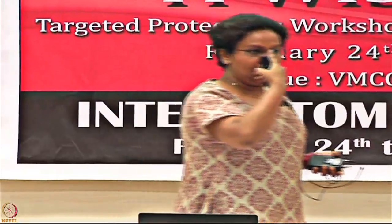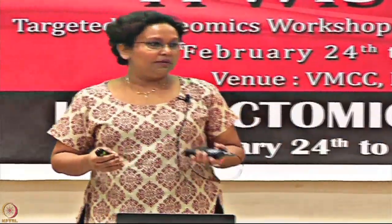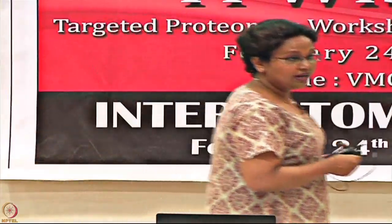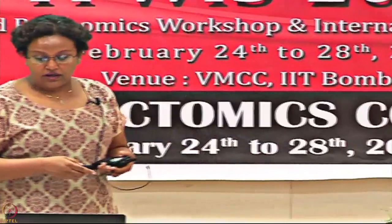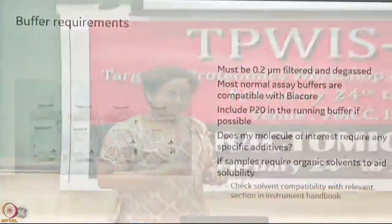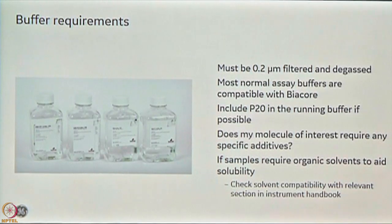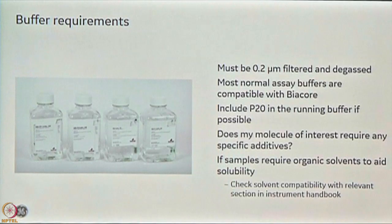Buffers should be 0.22 micron filtered. Include p20, a non-ionic detergent, in your running buffer — ionic detergents can damage the surface. The detergent helps remove stickiness from proteins that can adhere to the flow cell, which is important for system maintenance. In some cases where you see no binding, you might try removing p20 to see if that helps, but ensure you run a good maintenance cycle afterward.